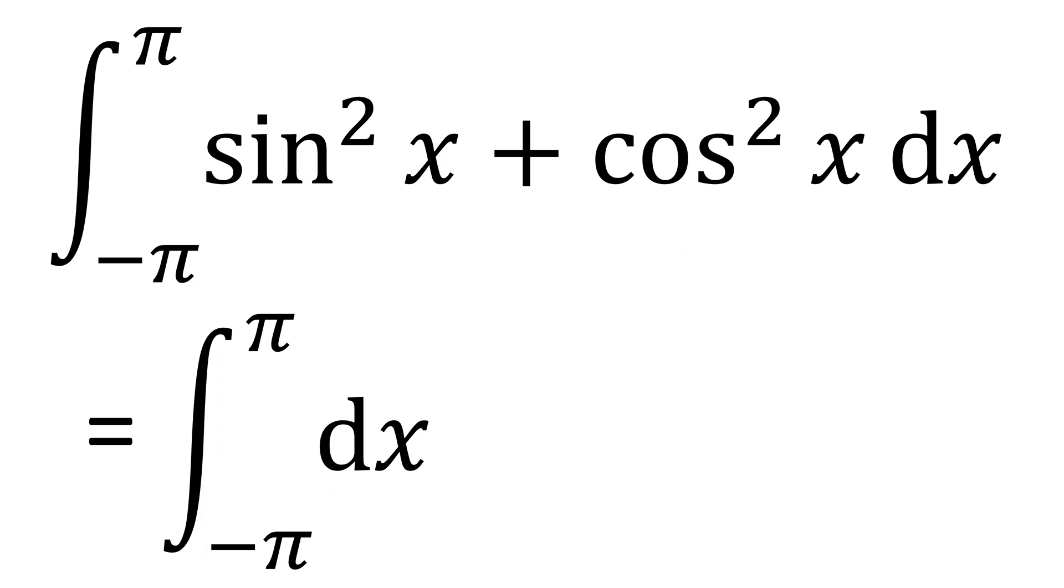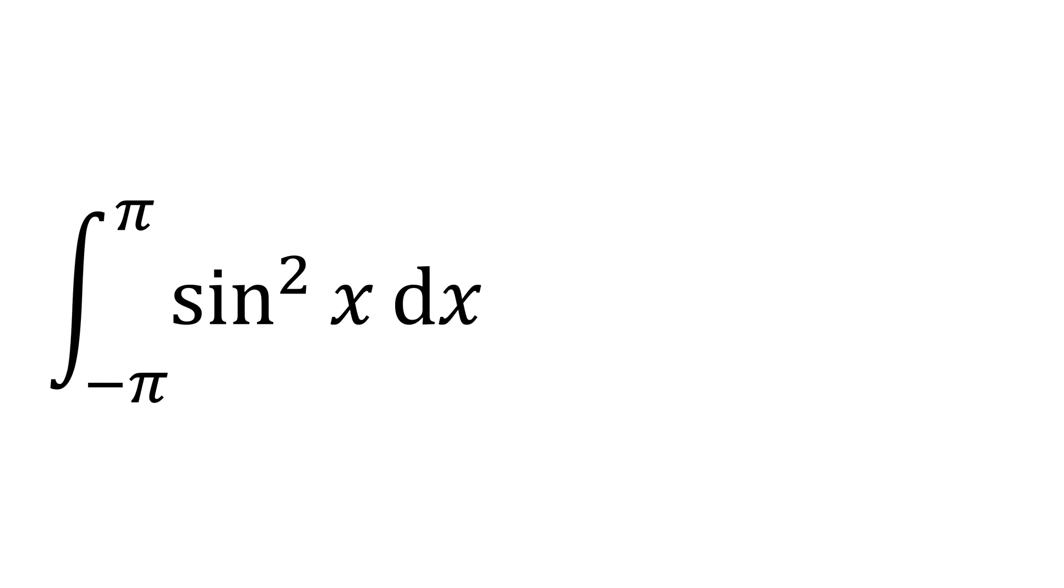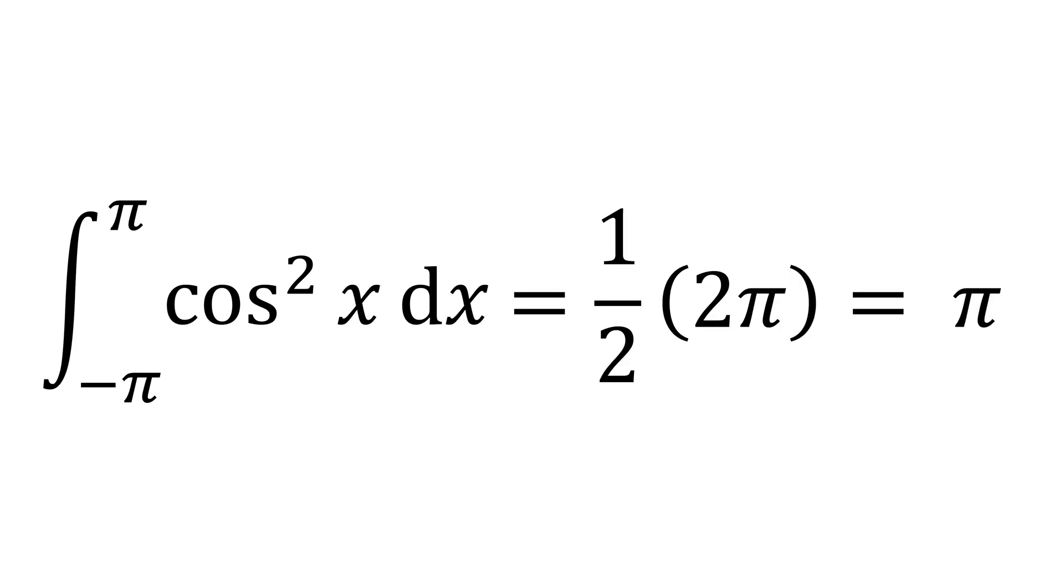The integral of sin square x plus cos square x from minus pi to pi becomes 2 pi. Since this result is a sum of sin square x plus cos square x, we need to divide it by 2, so we have pi. Likewise, the integral of sin square x from minus pi to pi is pi as well.